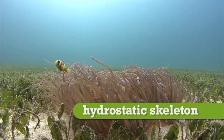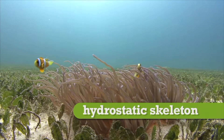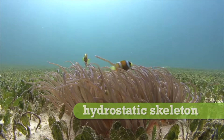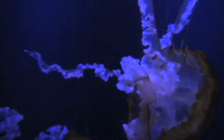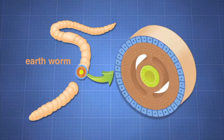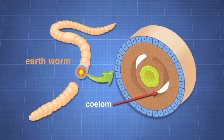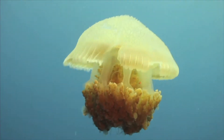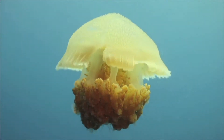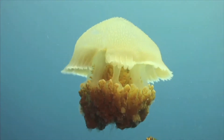Hydrostatic skeletons are found in soft-bodied invertebrates, like sea anemones, worms, and jellyfish. Such animals have a fluid-filled cavity called a coelum, which is surrounded by muscle wall. The pressure of the fluid pressing against the muscle wall provides the animal with rigidity, which acts as a skeleton. The hydrostatic skeleton gives the animal structural integrity and allows limited mobility.